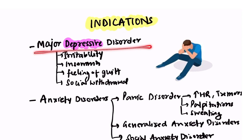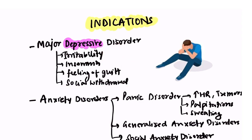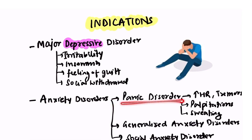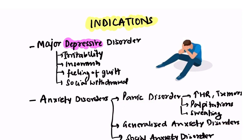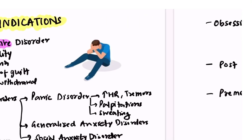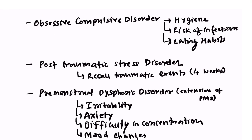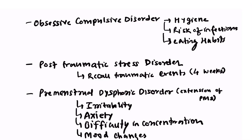Paroxetine is used in major depressive disorder, which consists of irritability, insomnia, feeling of guilt, and social withdrawal. Paroxetine is also used for many anxiety disorders like panic disorder, generalized anxiety disorder, and social anxiety disorder. Some features of panic disorder are increased heart rate, tremors, palpitations, and sweating.